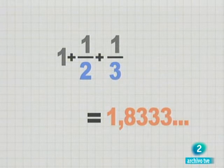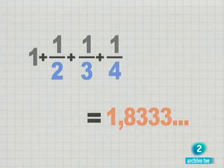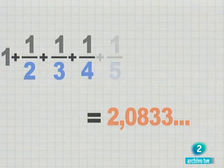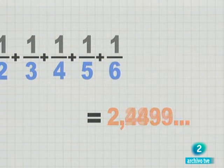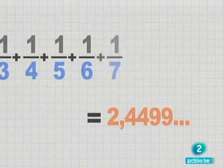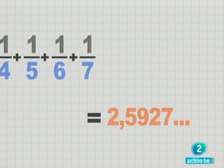Esta serie es la suma de los inversos de los números naturales y llega a ser más grande que cualquier número que nos podamos imaginar, por grande que éste sea. Es una serie divergente, como ya demostró Jan Bernoulli, el maestro del joven Euler.